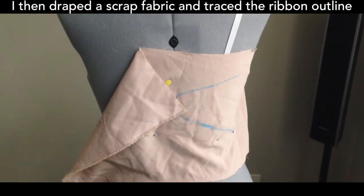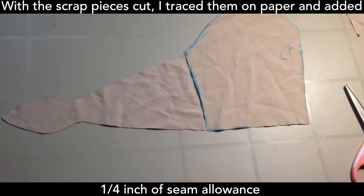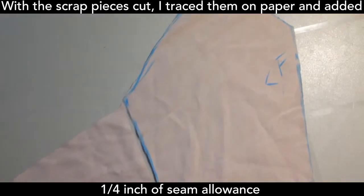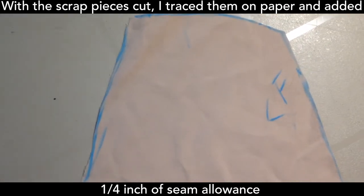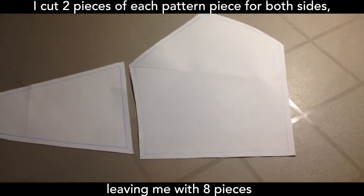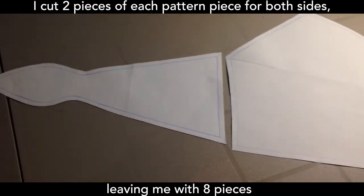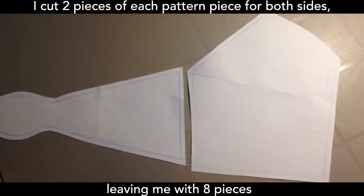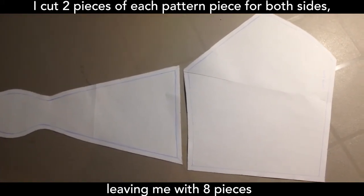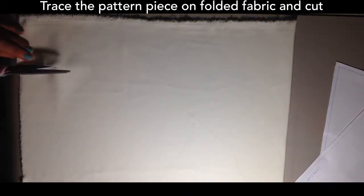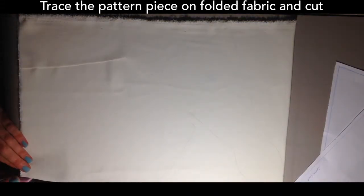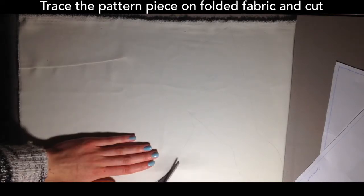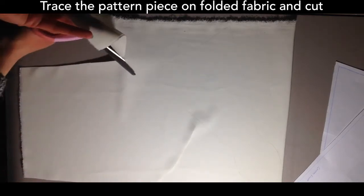And after I cut it out, I just traced it and then added 1/4 inch of seam allowance. Seam allowance is really important because if you don't add that, it's not gonna fit right. So here's the two pieces and then cut them out in paper.